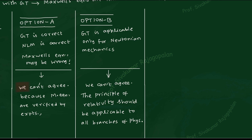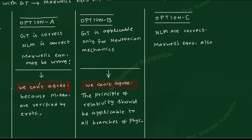Let me highlight that we are rejecting both Option A and Option B — both options are gone. So, what is the other way out? That is Option C. The argument for Option C is: Newton's laws of motion are correct, Maxwell's equations are also correct, and both of them are correct. Then what is wrong? We are going to throw the blame on the Galilean transformation — something is wrong with the Galilean transformation.